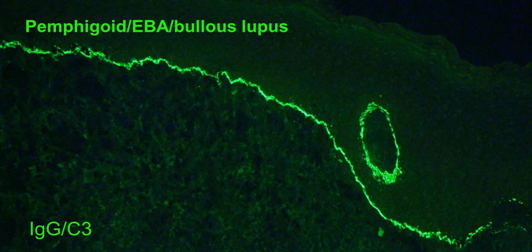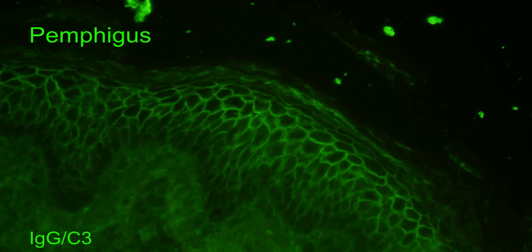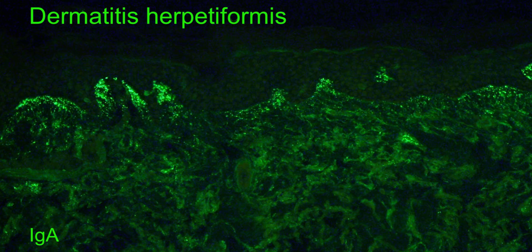Classically, pemphigoid, epidermolysis bullosa acquisita, and bullous lupus all show IgG with or without C3 in a linear distribution along the basement membrane zone. Linear IgA bullous dermatosis shows strong linear deposition of IgA along the basement membrane zone. Pemphigus typically shows cell surface deposition of IgG and/or C3; sometimes IgA may also show cell surface deposition, and very rarely IgA is the only conjugate involved. The direct immunofluorescence changes of dermatitis herpetiformis are very characteristic, with granular deposition along the basement membrane zone accompanied by stippling in the dermal papillae with IgA.